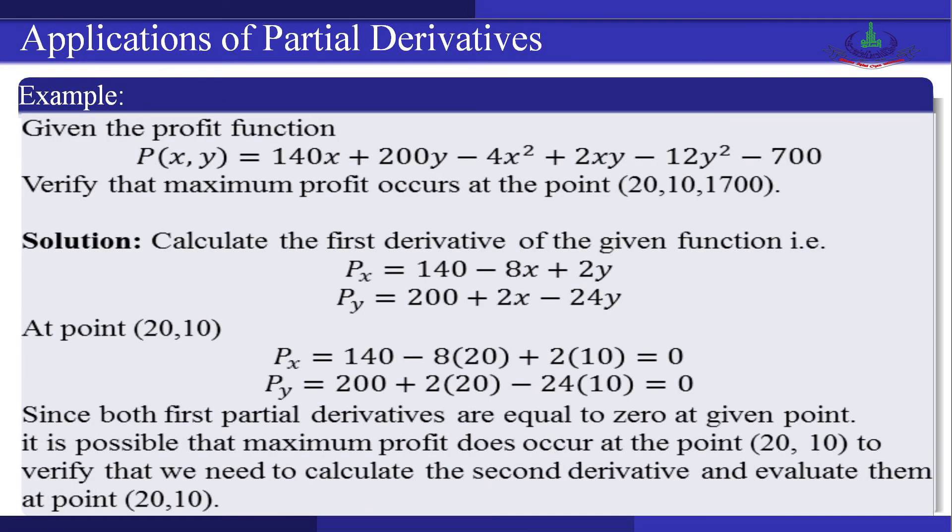Now we look at another example. Given the profit function P(x, y) = 140x + 200y − 4x² + 2xy − 12y² − 700, verify that maximum profit occurs at the point (20, 10). First we calculate the first-order partial derivatives: P_x = 140 − 8x + 2y, and P_y = 200 + 2x − 24y.